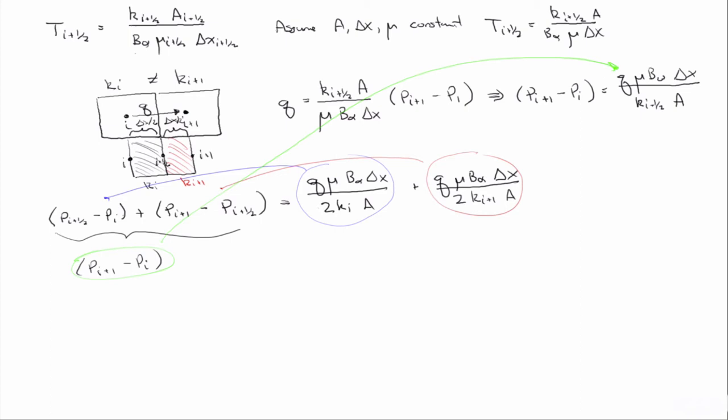If we set that equal to q... Then if we solve this equation for k i plus one, you'll see that most of the terms cancel each other.